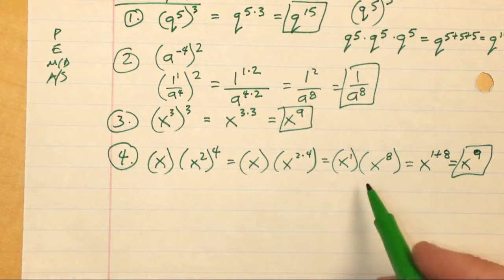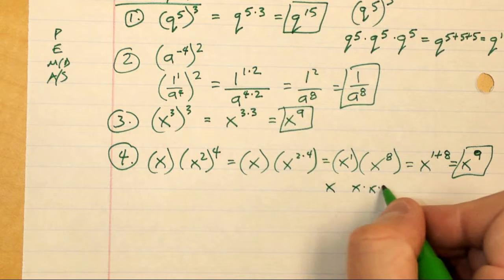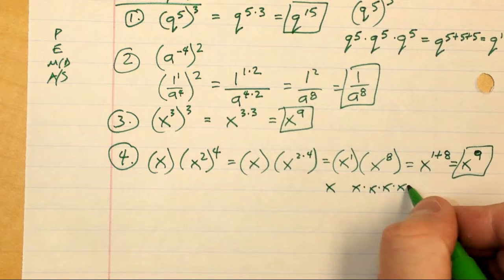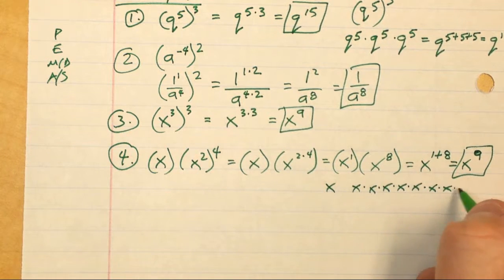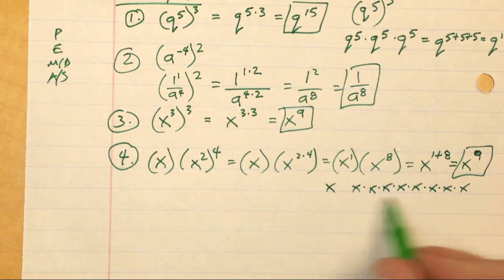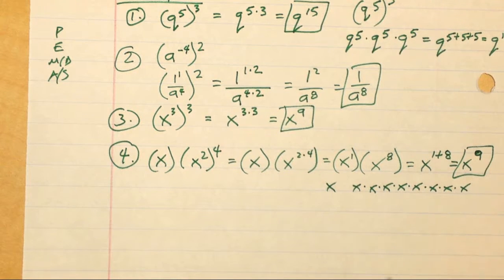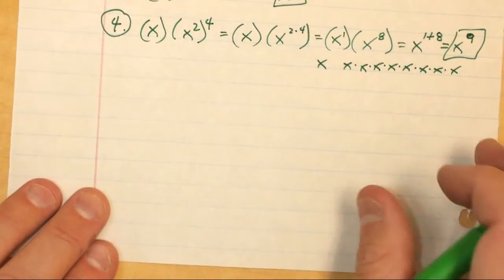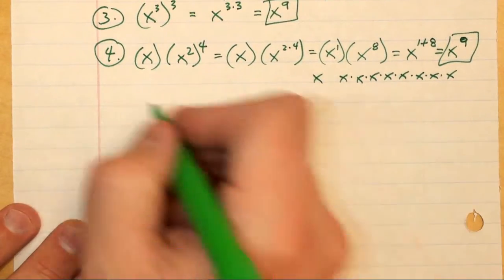The idea is I have one x here and eight x's there. If I add all these together I get a total of nine x's, which is why I have x to the ninth power. So I'm going to look at another example — number five.